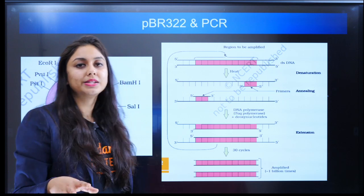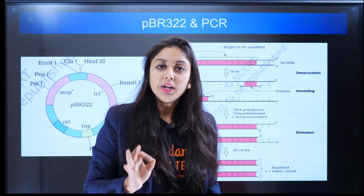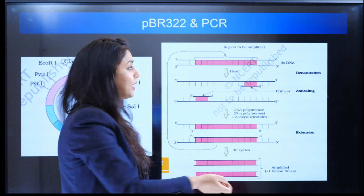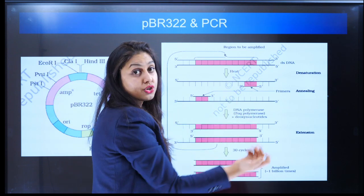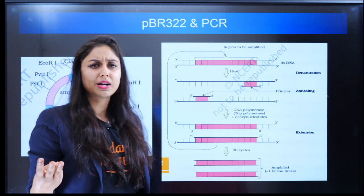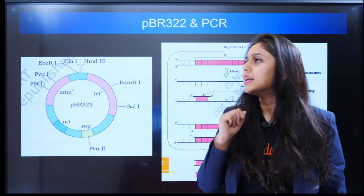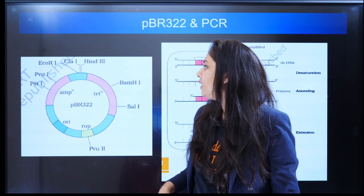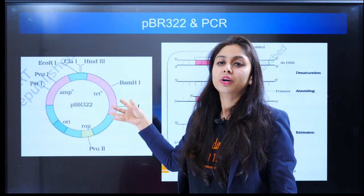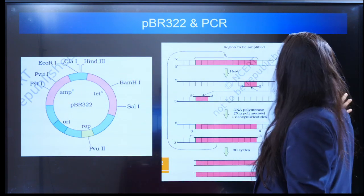PBR 322 and PCR. Whenever you get a PCR question, try to make at least the diagram. You don't need to draw everything, but you can explain what is denaturation, what is annealing, and what is extension. Even if it comes in three marks, drawing it will give a very good impact on the examiner. And yes, PBR 322 — this whole thing is very informative. It won't come for you to draw as such, but you can expect a lot of questions from this, so go through that as well.